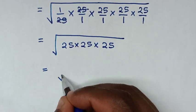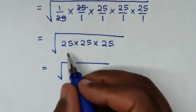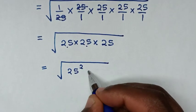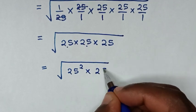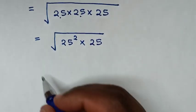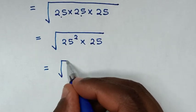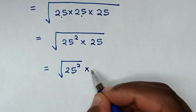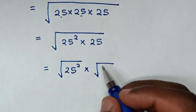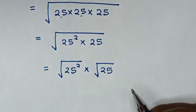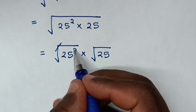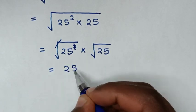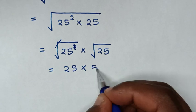In the next step, it will be equal to square root of 25 times 25, which is 25 squared, then times 25. This square root will cancel this square, so it will be equal to 25, then times square root of 25, which is 5.